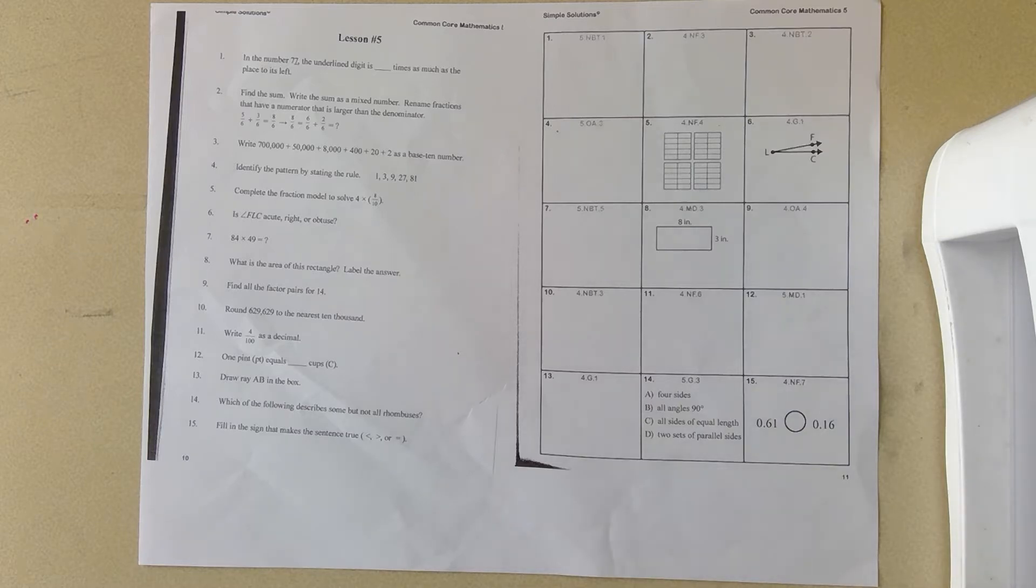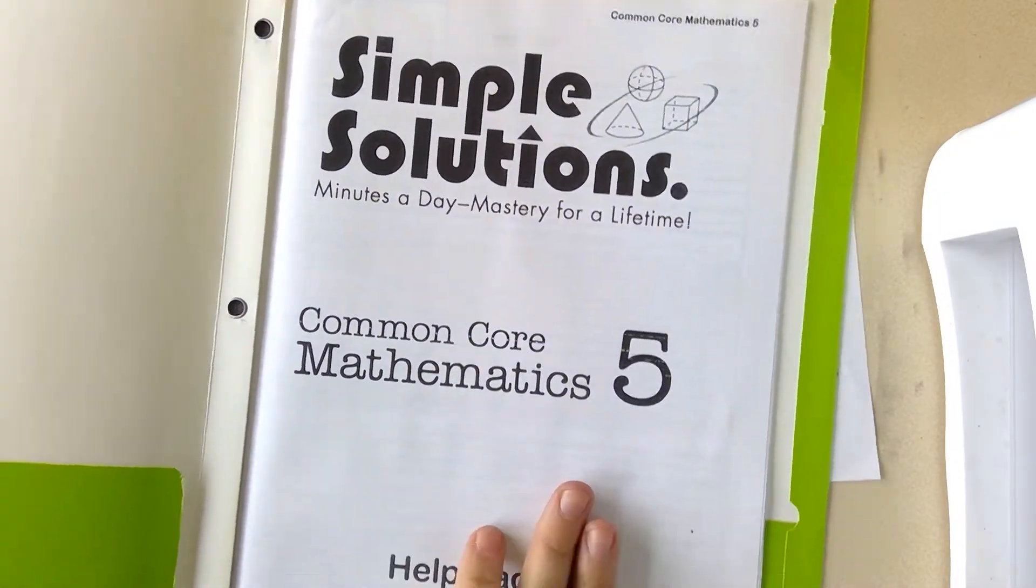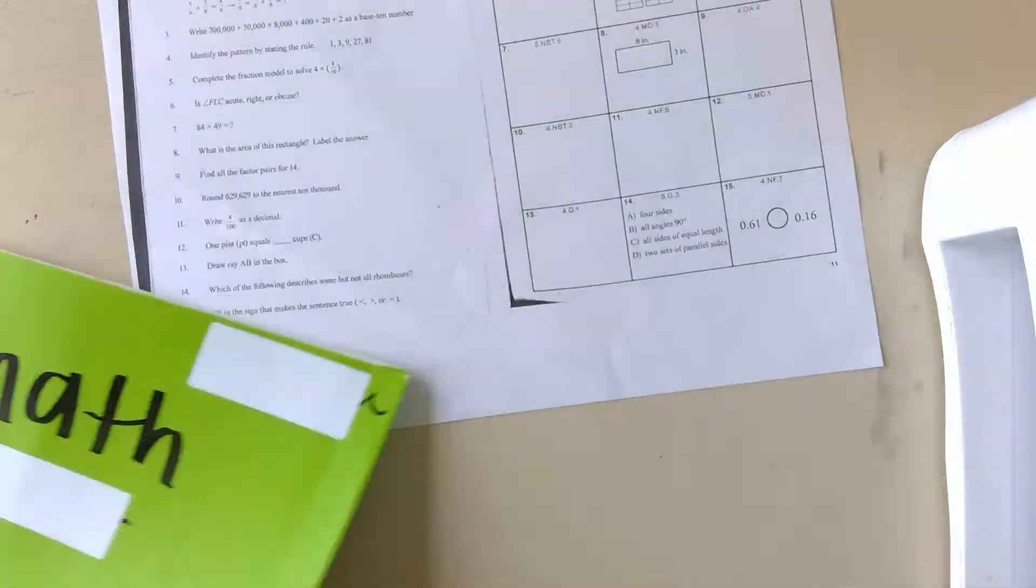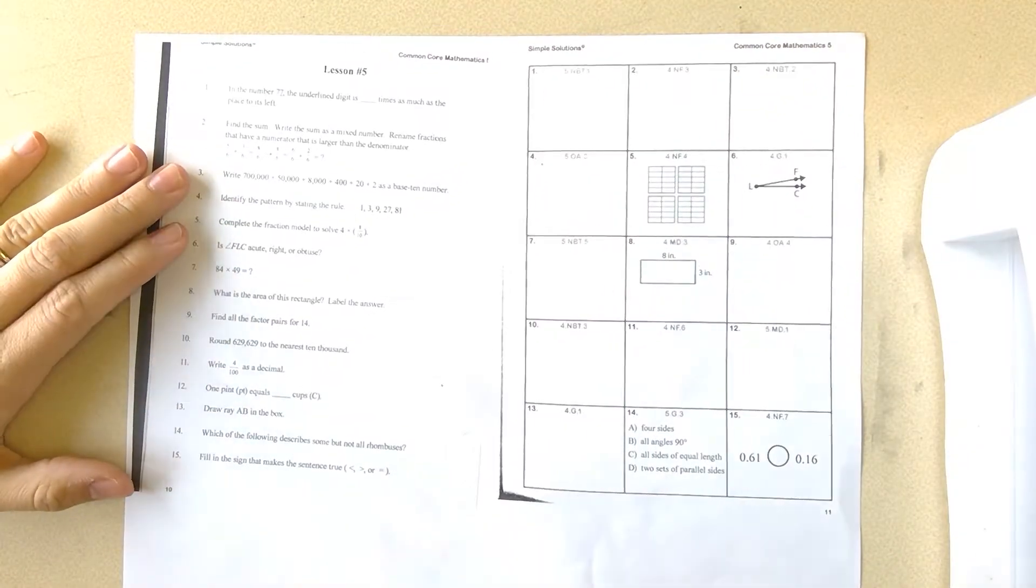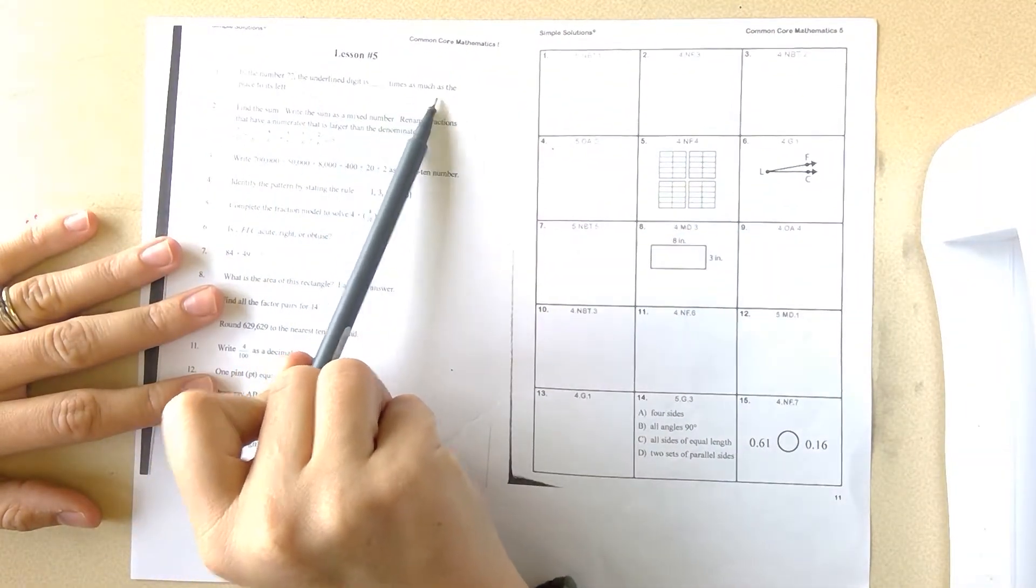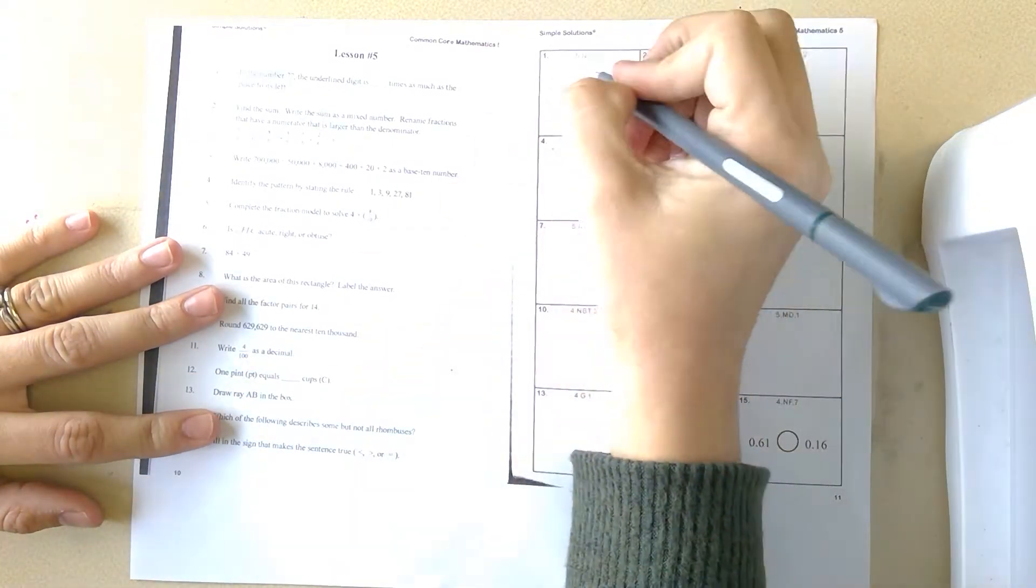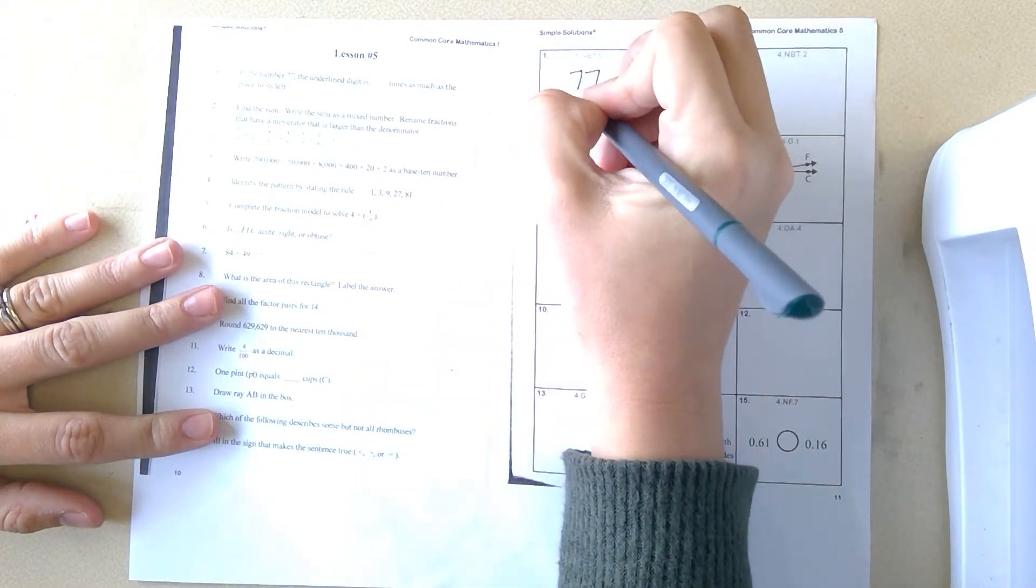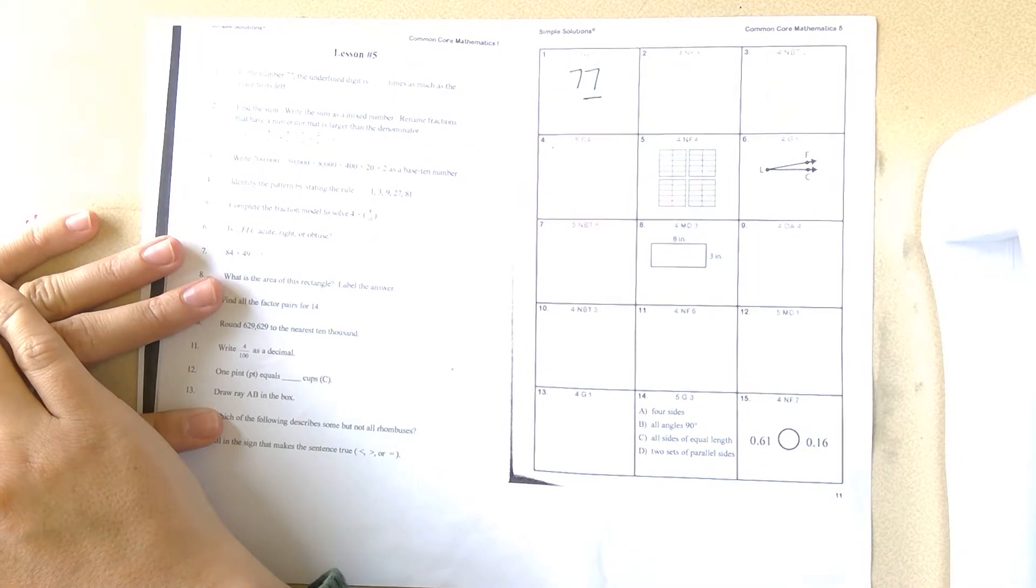Hey guys, we're going to be completing lesson number five in our math Simple Solutions. Remember to have your Simple Solutions help pages with you. Number one: in the number 77, the underlined digit is blank times as much as the place to its left. If we look at 77, they have the seven underlined in the ones place.